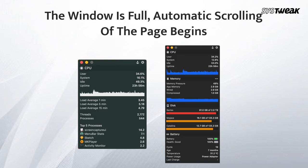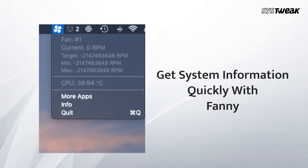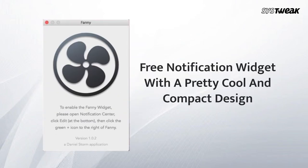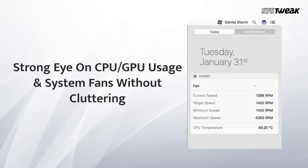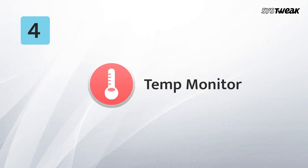Number three: Fanny App. With Fanny App you can get quick information on current speed, target speed, minimum speed, maximum speed, number of fans, and of course temperature. All you need to do is open the notification center and find the status of your fans.